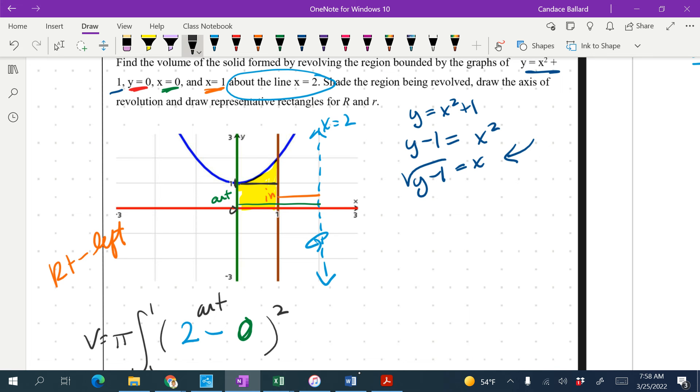And then I'm going to subtract my inner function. Again, we're in the dy, so we're going to put dy. My inner function is, we're going to start with the right. The right is still the axis of revolution. So we do 2 minus the inner function, which is the x equals 1.